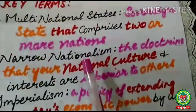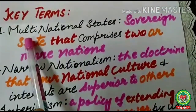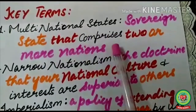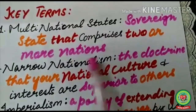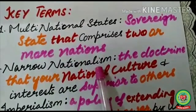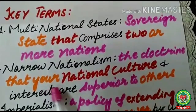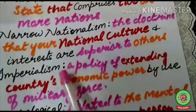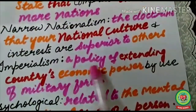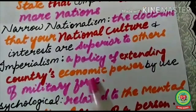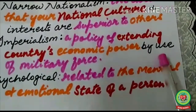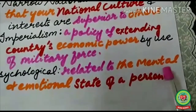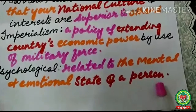Before today's discussion, let me cover some key terms. First, 'multinational state' means a sovereign state that comprises two or more nations. 'Narrow nationalism' is the doctrine that your national culture and interests are superior to others. 'Imperialism' is a policy of extending a country's economic power by use of military force. 'Psychological' relates to the mental and emotional state of a person.